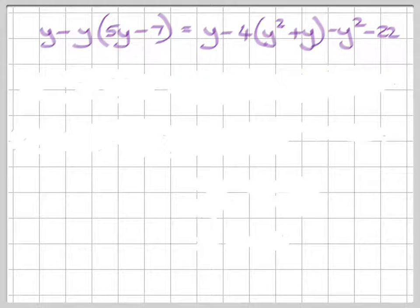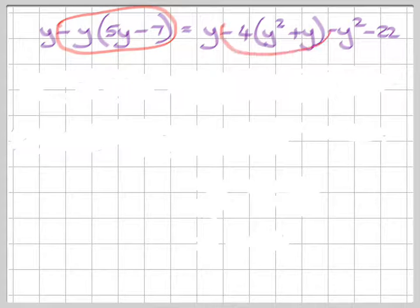Now let's look at this one. We can see we've got symbols of inclusion on either side of our equal sign. But that's not a problem. We just deal with them first. So we're first going to work that into that and then that into that.